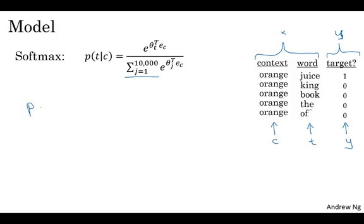So what we're going to do is define a logistic regression model. We say that the chance that y is equal to 1 given the input C, T pair, we're going to model this as basically a logistic regression model. But the specific formula we use is sigmoid applied to theta T transpose E_C. So the parameters are similar as before. You have one parameter vector theta for each possible target word, and a separate parameter vector, really the embedding vector for each possible context word. And we're going to use this formula to estimate the probability that y is equal to 1.